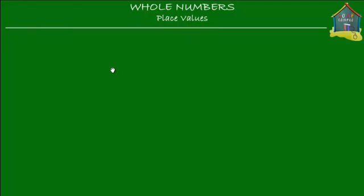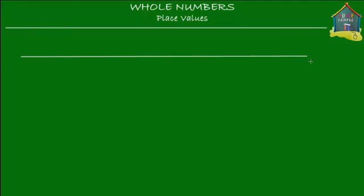Now, there are just 10 unique symbols that are available to you to make any number on earth. So if I make a number line over here and I put the numbers starting at 0, I have 0, then 1, 2, 3, 4, 5, 6, 7, 8, and 9.